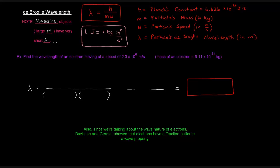Let's use this equation for a practice problem. We're asked to find the wavelength of an electron moving at a speed of 2.0 times 10 to the 6 meters per second. The mass of an electron is given as 9.11 times 10 to the negative 31 kilograms. The equation is already solved for lambda, so we just plug in the values — u is 2.0 times 10 to the 6 m/s and m is 9.11 times 10 to the negative 31 kg.